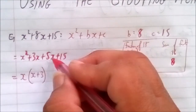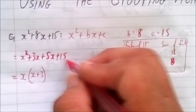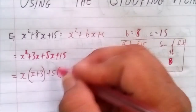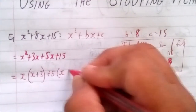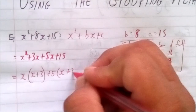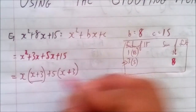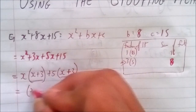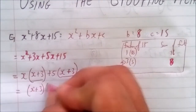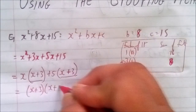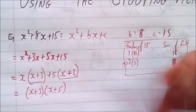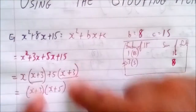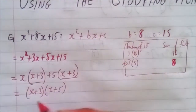Now look at the third and fourth terms. They have positive 5 in common, so we put plus 5 here. 5x divided by 5 gives x, and 15 divided by 5 gives 3. Both groups share the factor x plus 3, so we write x plus 3 times x plus 5. That's our solution.